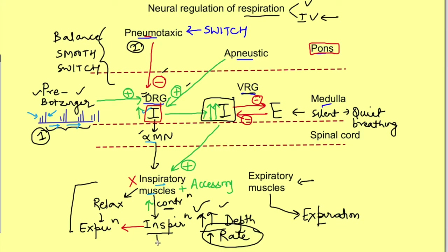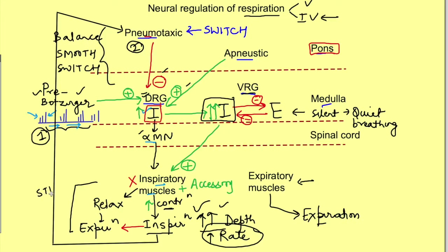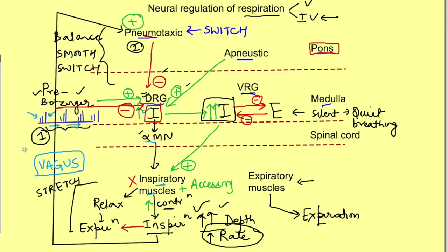Who activates the pneumotaxic center? There is a negative feedback mechanism operating via stretch receptors in the tracheobronchial tree. When there is lung inflation, these stretch receptors are stimulated and send afferents via the vagus nerve to the pneumotaxic center, activating it. So the vagus nerve inhibits the inspiratory neurons via the pneumotaxic center — more inflation causes stopping of inspiration and a switch to expiration. This is also the mechanism of the Hering-Breuer reflex: when lung inflation exceeds one liter, it initiates expiration. So there is a negative feedback: lung inflation stimulates stretch receptors, activates the vagus, and inhibits inspiratory neurons.